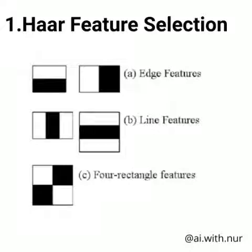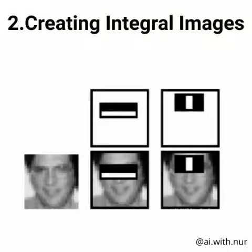In Haar feature selection, features would be our face, nose, eyebrows, eyes, etc. Features are selected in three forms: two-rectangle features, three-rectangle features, and four-rectangle features. As we can see, each feature is divided into two parts — a white part (the brighter part of the face) and a black part (the darker part). The pixel sums are computed and the difference between these is calculated.